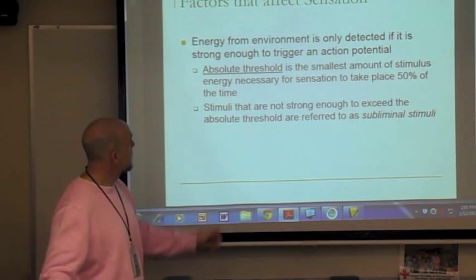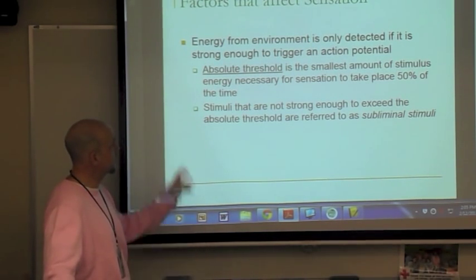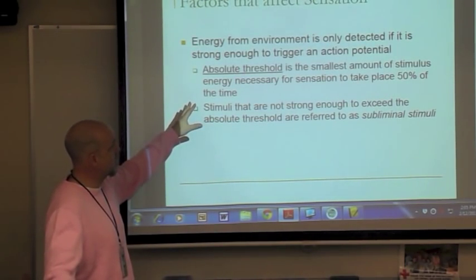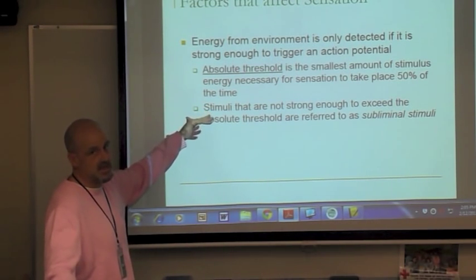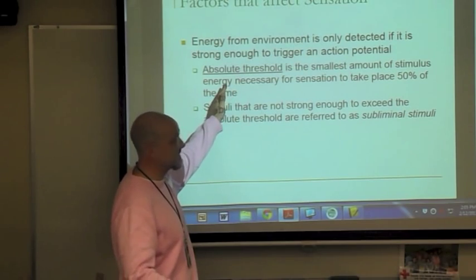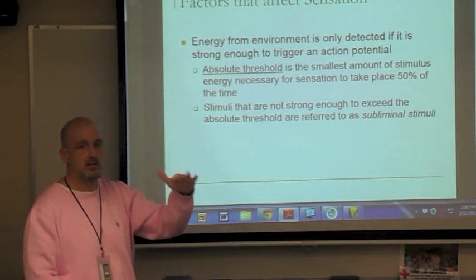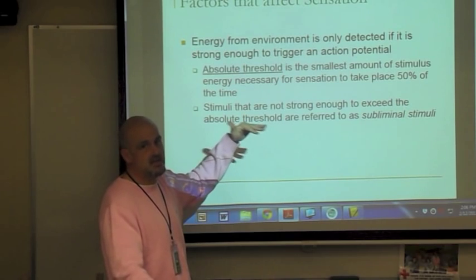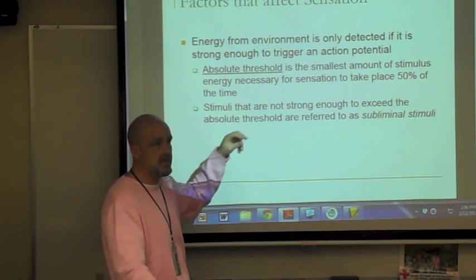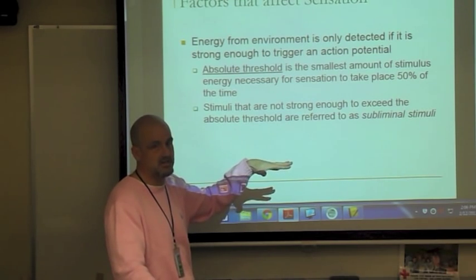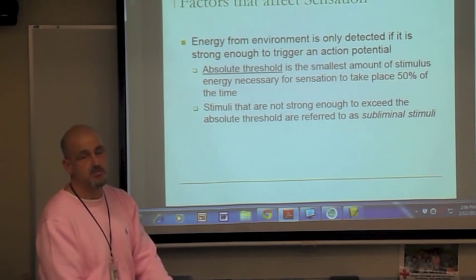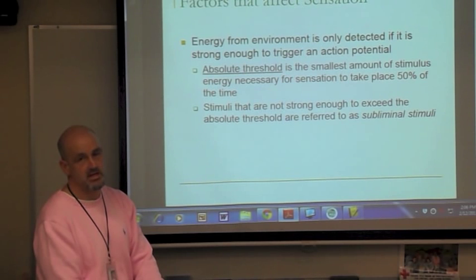Energy from the environment is only detected if it's strong enough to trigger an action potential. It has to exceed the absolute threshold — the minimum level of stimulation necessary. Once something exceeds the absolute threshold, an action potential can take place and the brain processes the information. If it's too faint — referred to as subliminal — it comes in under the absolute threshold and action potentials don't get triggered.